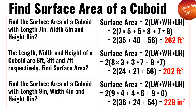Find the surface area of the cuboid with length 7 inches, width 5 inches, and height 8 inches. 2(7×5 + 5×8 + 7×8). 7 times 5 is 35, 5 times 8 is 40, 7 times 8 is 56. 2(35 + 40 + 56) is equal to 262 inches squared.